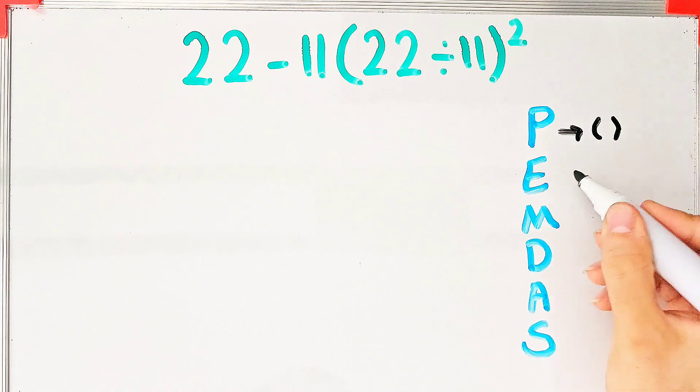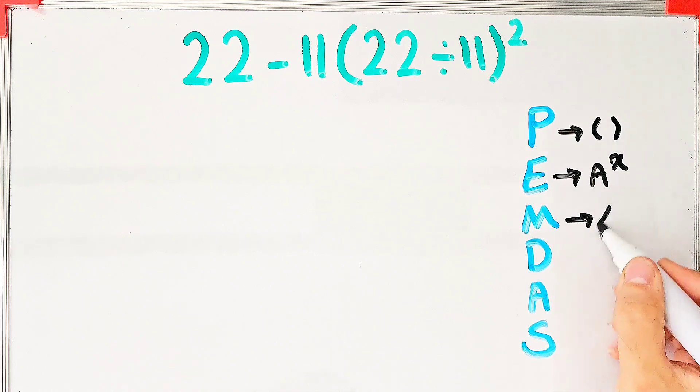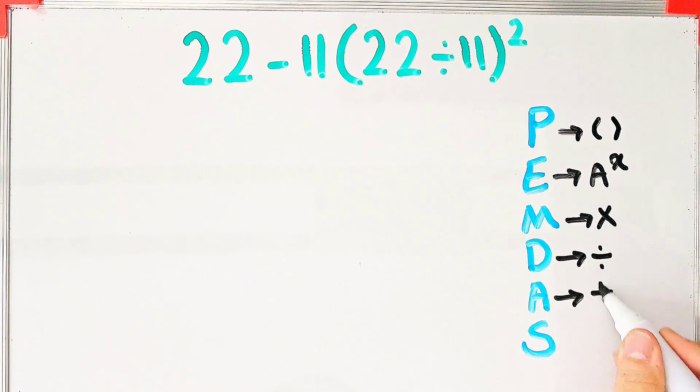In this rule, P stands for parentheses, E stands for exponent, M stands for multiplication, D stands for division, A stands for addition, and S stands for subtraction.